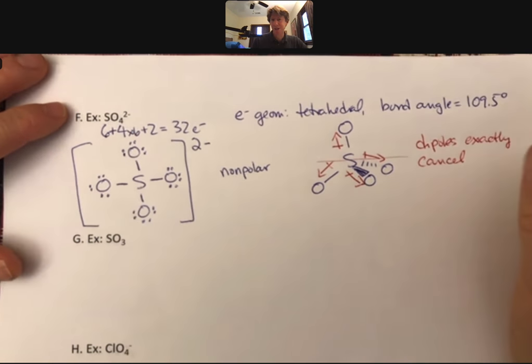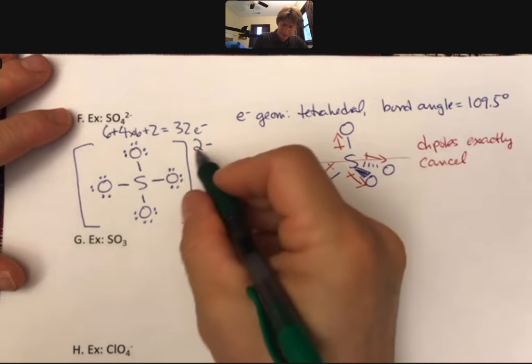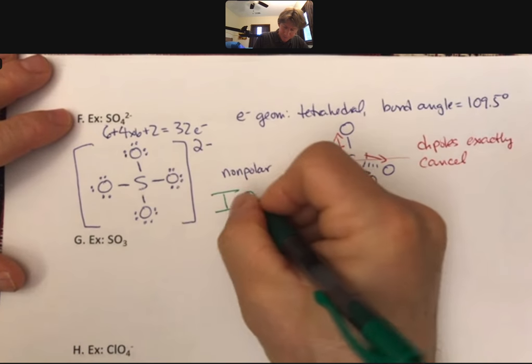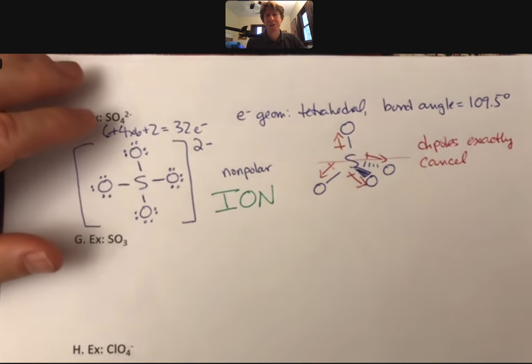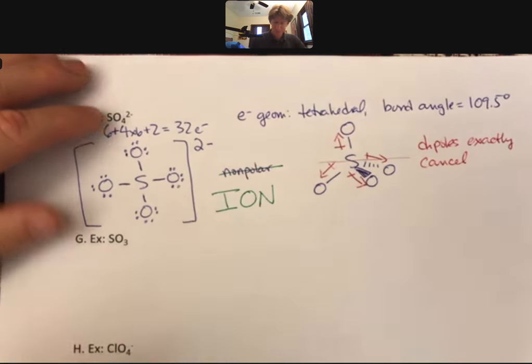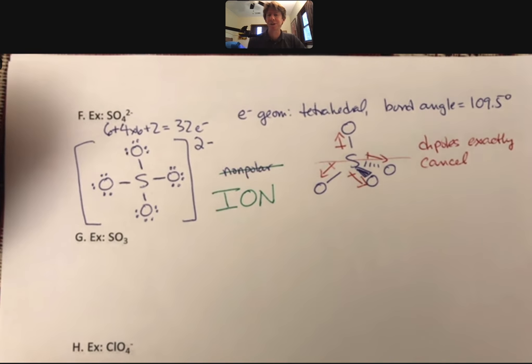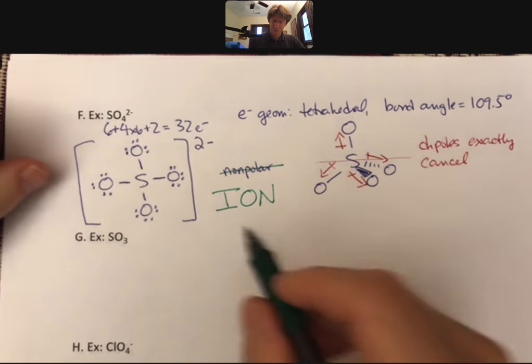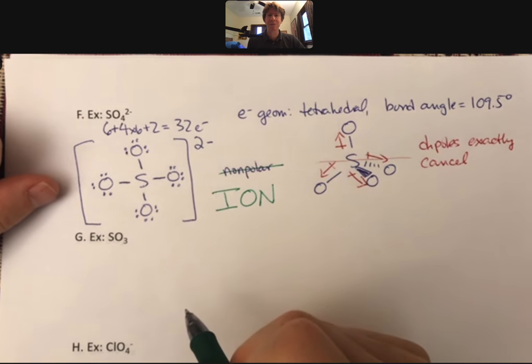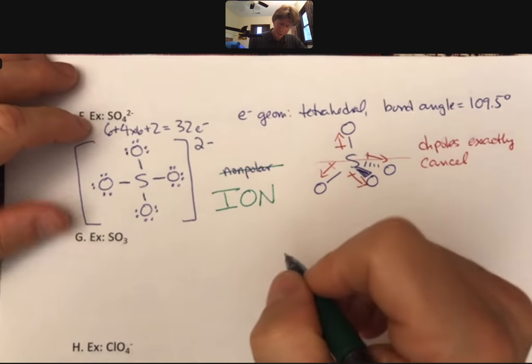So it has no dipole. But in the end, it's an ion. And ions are in their own special category. So, yes, all the dipoles exactly cancel. We can think of this as nonpolar. However, the overriding thing that we will see when we think of sulfate as ion or ionic.